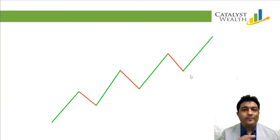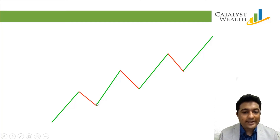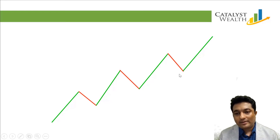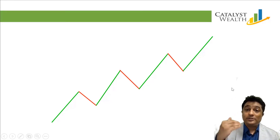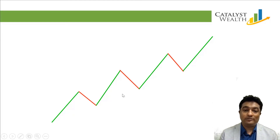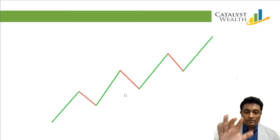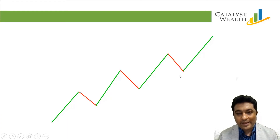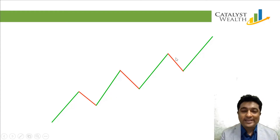But does the stock go vertically up? No, it goes up, takes a dip, goes up, takes a dip, and so on. When it finally breaks the bottom and makes a lower bottom, that's where the trend changes. So this is an uptrend where the dips are higher than the previous one, making higher bottoms and higher tops.